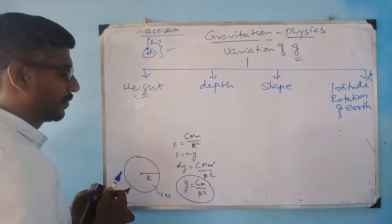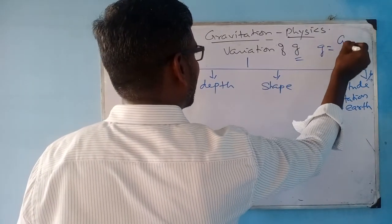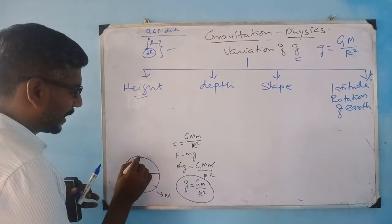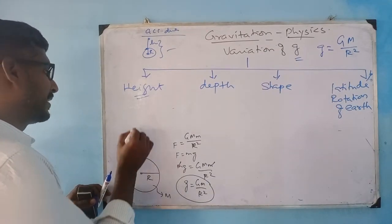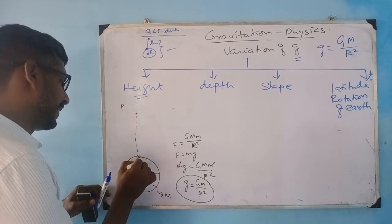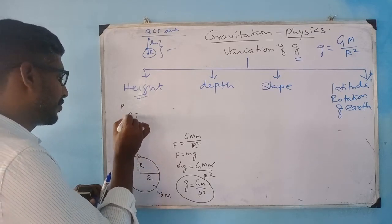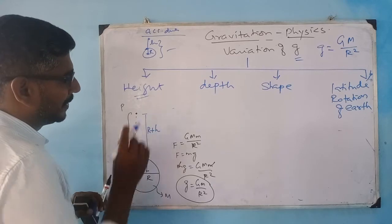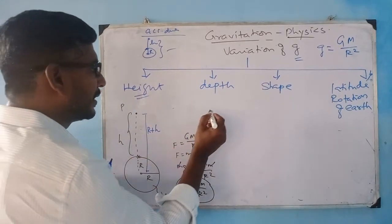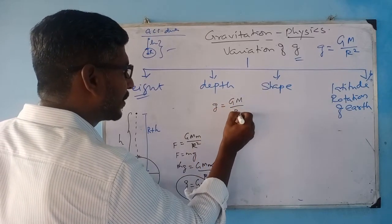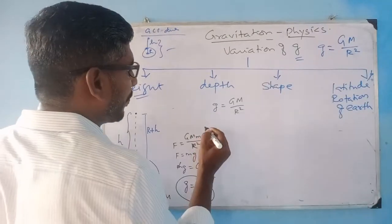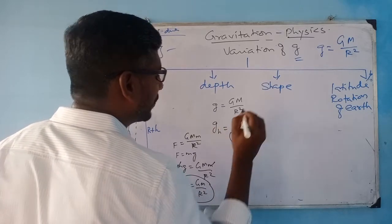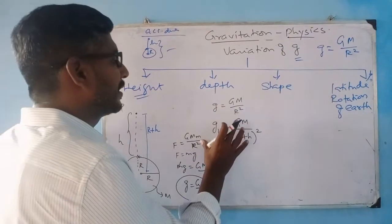Variation of g on the surface of the Earth: g = GM/R². Now I want to find variation of g at height h, at point P. This is height h, radius is R, and the total distance from center to point P is R + h. At height h, the formula becomes g(h) = GM/(R+h)². Dividing equation 2 by equation 1: g(h)/g = R²/(R+h)². This is one of the important relations you should remember.